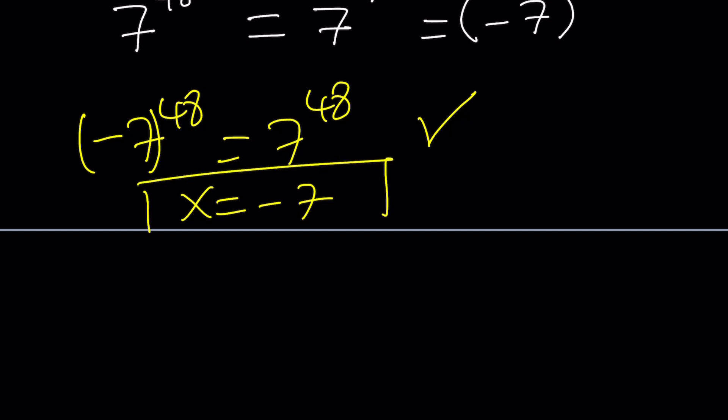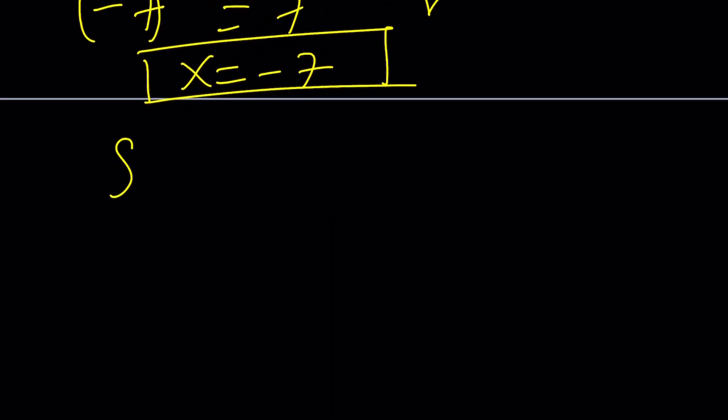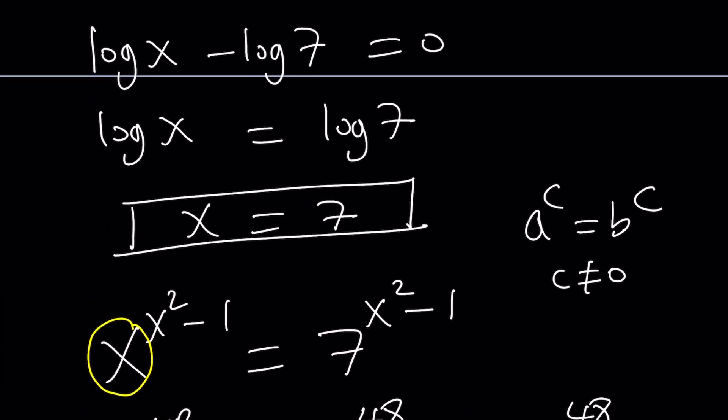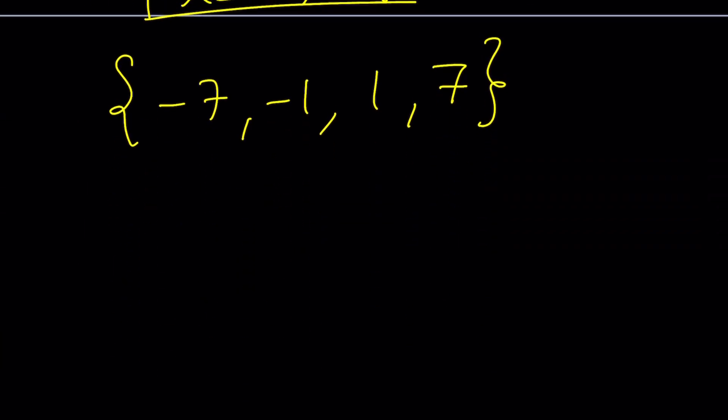So, in total, how many solutions did we get? Four. Let's go ahead and list them. Negative 7, negative 1, 1, and 7. Is this always going to work? So, here's another expansion on this problem. If we did have something like x to the power x squared minus 2, and let's say something like 7 to the power x squared minus 2, would this also be satisfied by negative 7? Think about this, and then hopefully you'll find an answer. Okay, great. So, you can generalize this too.